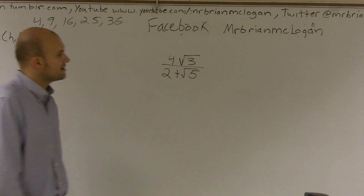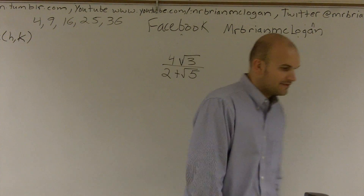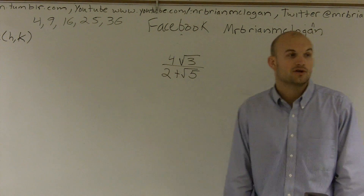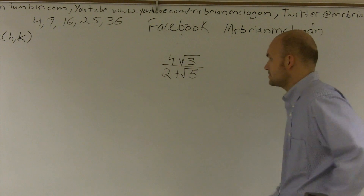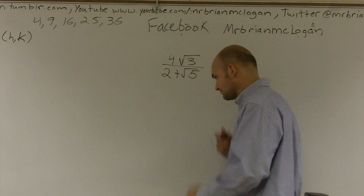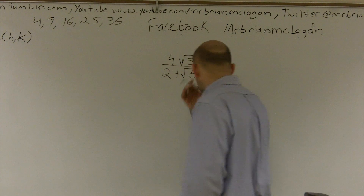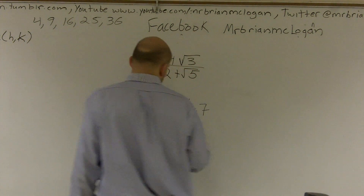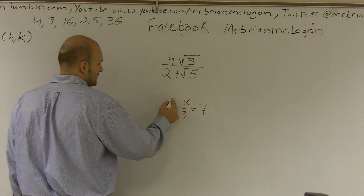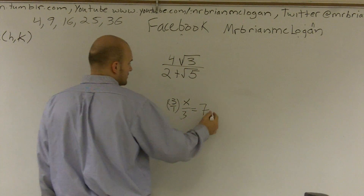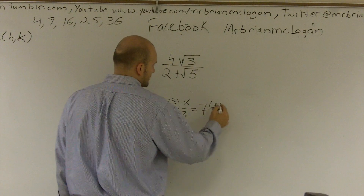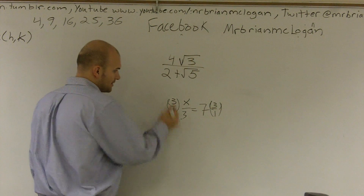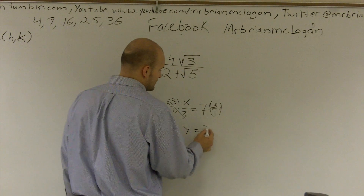One thing I like to tell all my students is whenever you have a fraction, an easy way to get rid of that fraction is to multiply by what's on the denominator. So if I had something like x over 3 equals 7, to get rid of this fraction I can multiply by 3 over 1 — kind of like the reciprocal of your denominator — and that cancels out, giving you x equals 21.